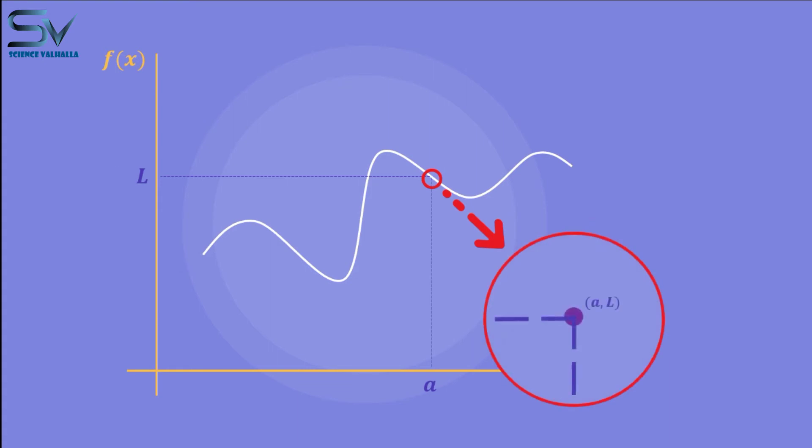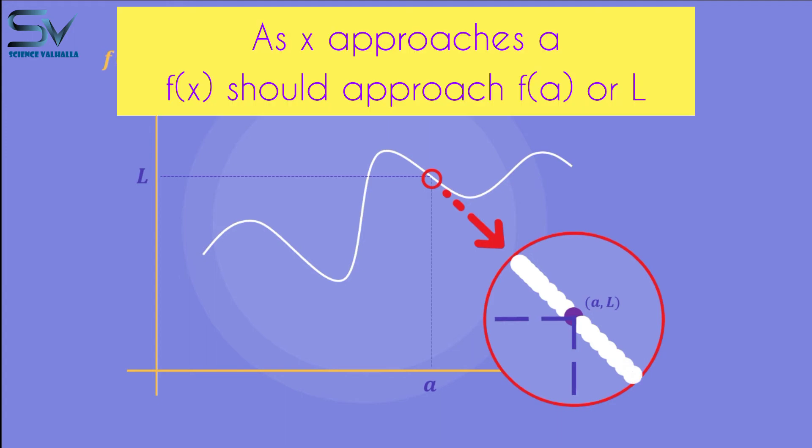This means that we want a stream of points which get closer and closer, arbitrarily close, in fact, to the point A, L. In other words, as X approaches A, we need f(x) approach f(A).